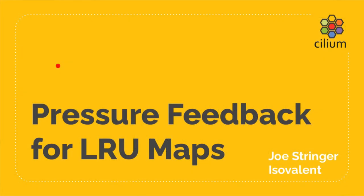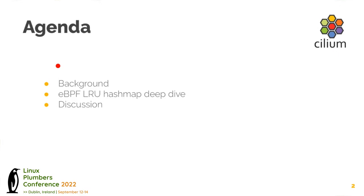This is a discussion about how we get some sort of pressure feedback or contention feedback from LRU maps in the BPF subsystem. I'll talk about the background that inspired this talk, a particular incident we had, do a deep dive on how the LRU actually works in the BPF subsystem, and then hopefully that's a basis for discussion about whether there are things we can do to emit some sort of signal about contention on the LRU map.